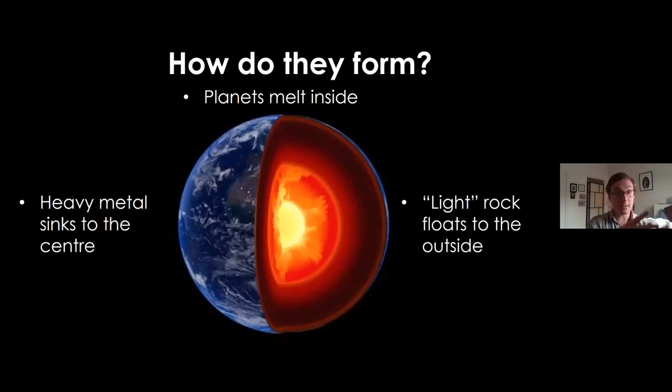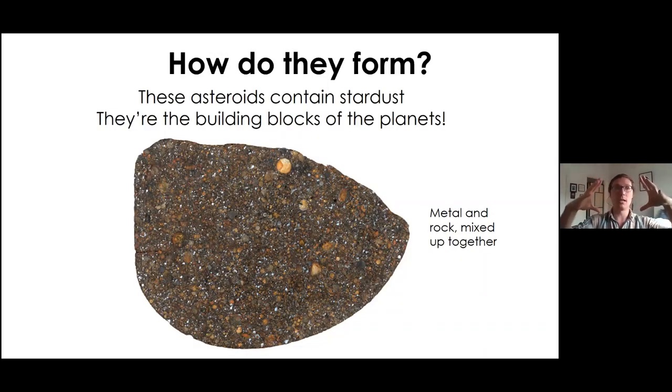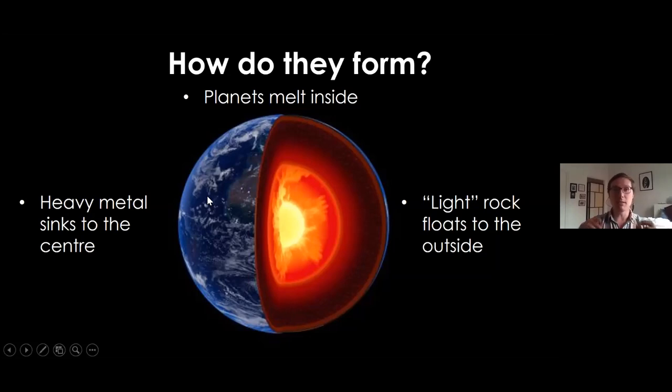You get everything - the rock and metal are all finely mixed together. You have those ices as well sometimes. So you have all the building blocks for a planet compressed into this rock. If you get enough of that together, it starts to heat up inside. The heat inside that world can't escape and it starts to melt. When you melt it, that fine-grained metal starts to clump together and sink to the core, forming the core of the planet like on Earth, whereas the relatively light rock floats to the outside. That forms the mantle and crust. If there's any ice or volatiles like water, that might form an ocean or atmosphere like on Earth.